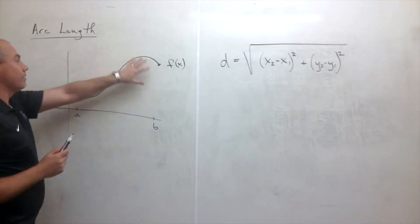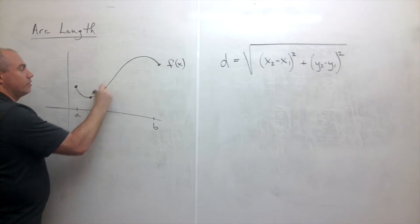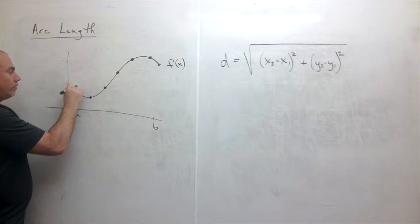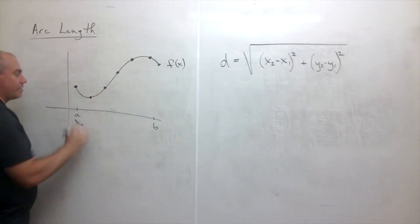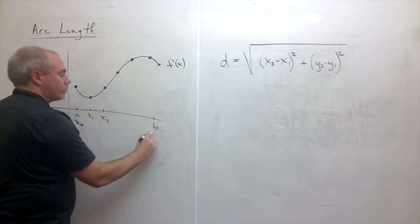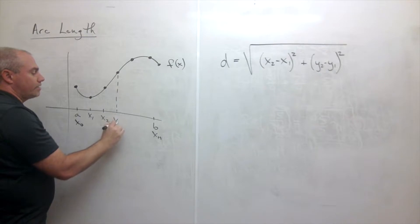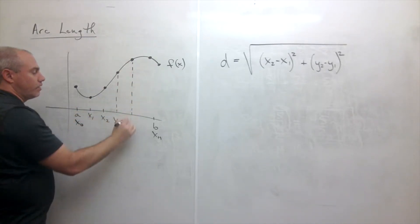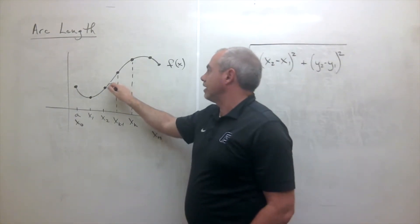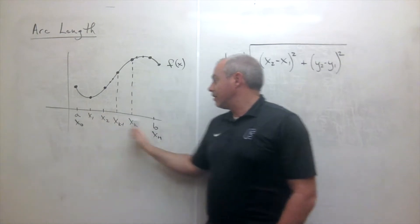What I'm going to do is the same thing we do a lot in calculus: estimate it. I'll break the curve up into pieces. I'll call the first point x₀, the second x₁, the third x₂, and so on up to the last one xₙ. There may be other points in between; let's call a general one x sub k minus 1 and the next one x sub k.